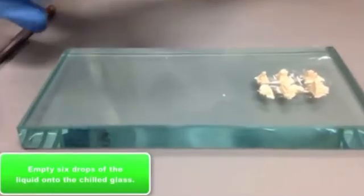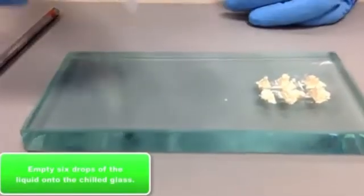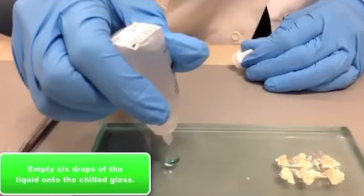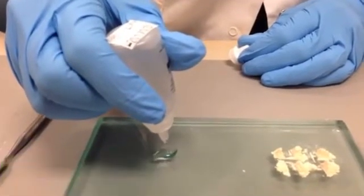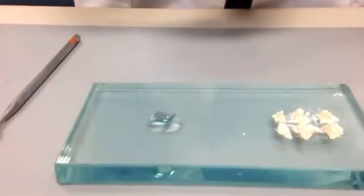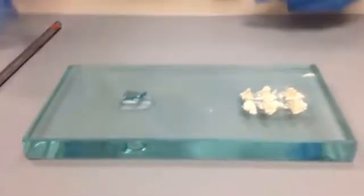So the next step is to empty six drops. You want to turn the container completely upside down and let six equal sized drops fall onto the slab. And now you're ready to mix.